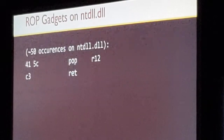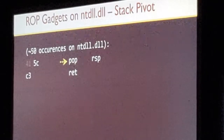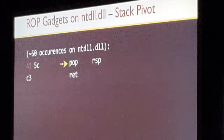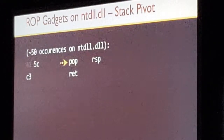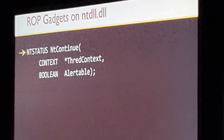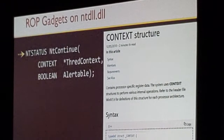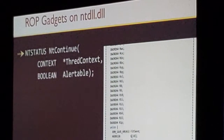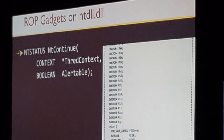Another very important gadget is POP RSP — the stack pivot. Sometimes when you exploit a vulnerability, you can only write a limited number of bytes onto the stack when hijacking it. This gadget allows you to write the whole ROP chain into the heap or another location with more space, then simply pivot the stack to that address. You just need to write the return address to the stack pivot, and you can have a ROP chain as long as you want. One of the most powerful gadgets in NTDLL is actually a function — NtContinue — which takes two parameters. You can completely ignore the second parameter and the results. The context structure contains processor-specific register data, meaning you can replace all register values of the currently running thread — not only RCX, RDX, R8, R9, but also the stack pointer and instruction pointer. That's an extremely powerful gadget.